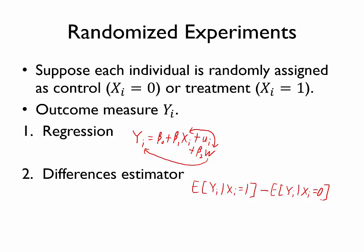well, that estimated beta 1 hat should also represent the difference in the average of the outcome between the treatment and the control group. In other words, beta 1 hat from the regression is also the same as the differences estimator.